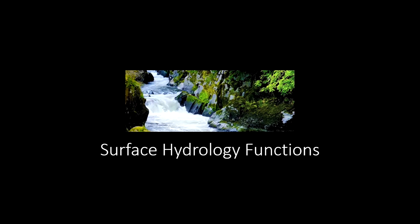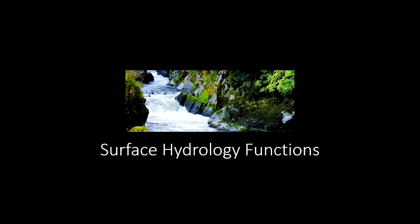Now let's take a look at some analytical methods to model the movement of water over a surface. Water always flows downslope. We can use these methods to extract several different forms of hydrologic information from different surface grids or surface rasters. Typically we'll use DEMs, or digital elevation models, to do this, with the z-values depicting elevation using floating point grids instead of integers.